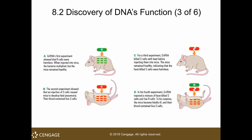However, when he mixed the heat-killed S strain with the live R strain and injected that mixture into mice, the mice died. When he autopsied the mice, he found live S cells in the blood. So somehow the benign R strain had become a malignant S strain.